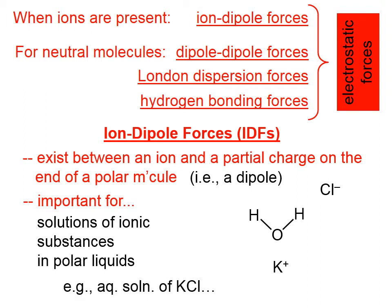We know that oxygen is far more electronegative than hydrogen, which means there is a partial negative charge on the oxygen and a partial positive charge on each of the two hydrogens. Because of that, there is a slight attraction between the ions in solution and the different ends of the water molecule. Those rather tiny attractions are called ion-dipole forces. Those dotted lines represent a slight attraction — that is, they represent the ion-dipole forces.